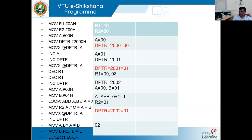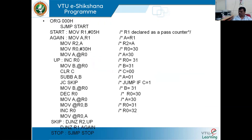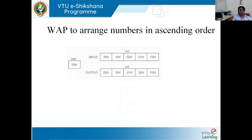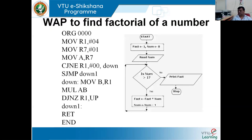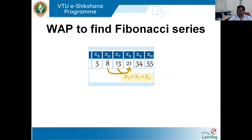In today's class we discussed three programs: arranging numbers in ascending or descending order, finding the factorial of a given number, and generating the Fibonacci series. In the next class, we will discuss the interfacing part — how to interface a switch and LED to the 8051 microcontroller. The 8051 has four ports (P0, P1, P2, P3), each with eight I/O pins, giving a total of 32 I/O ports. We'll discuss which port to use for interfacing in the next class. Thank you.